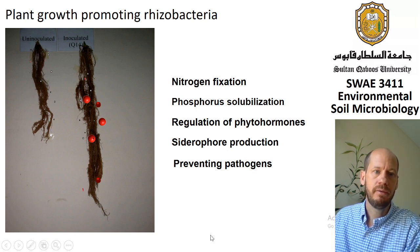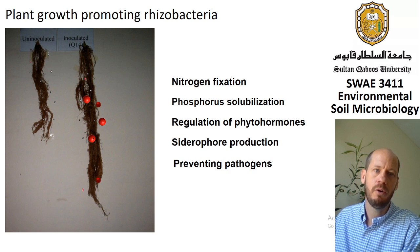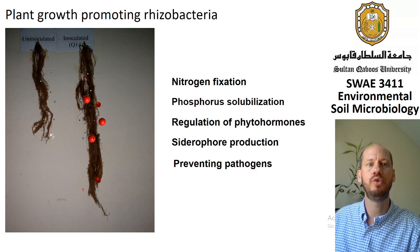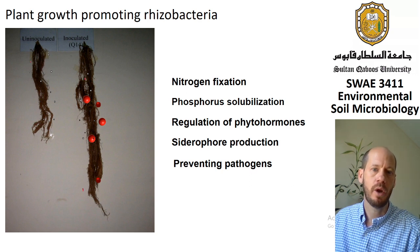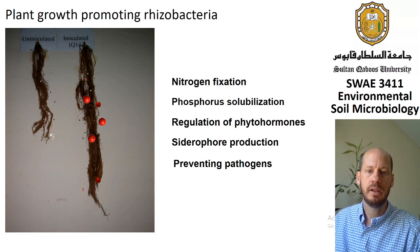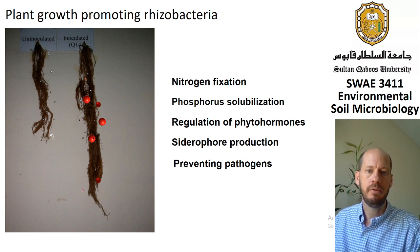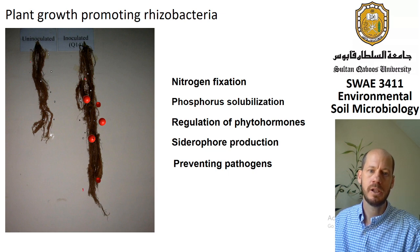Last but not least, we have a functional group — not a taxon — of bacteria that inhabit the rhizosphere and help plants in different ways. These are called plant growth-promoting rhizobacteria. Some ways they help plants include nitrogen fixation, phosphorus solubilization, regulation of plant hormones, ACC deaminase production, and preventing the occurrence of pathogens. These bacteria can be inoculated and bioaugmented in soils to help plants grow better, either by inoculation or by creating the right conditions for them to occur.